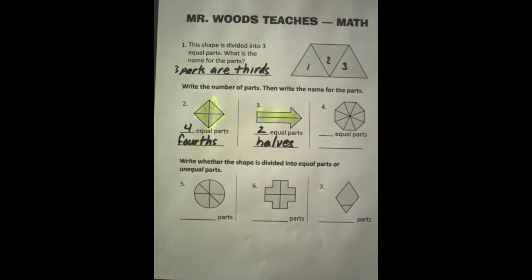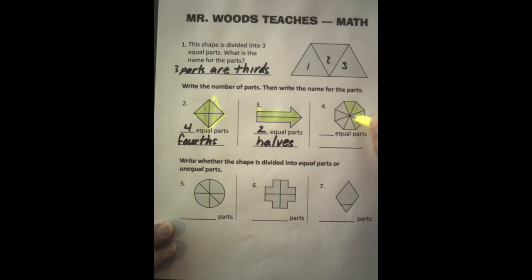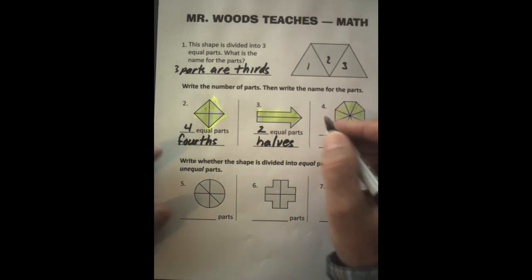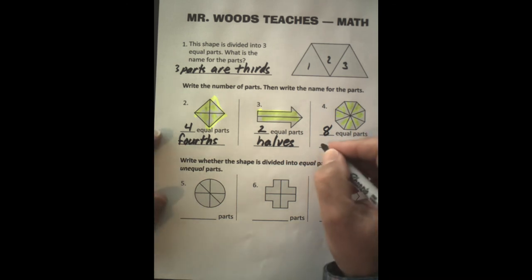How many parts do we have here? Well let's count. One, two, three, four, five, six, seven, eight. So we have eight equal parts. And it's eights. E-I-G-H-T-H-S. Eights.